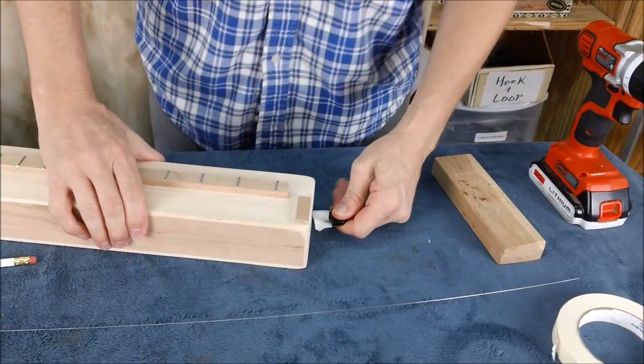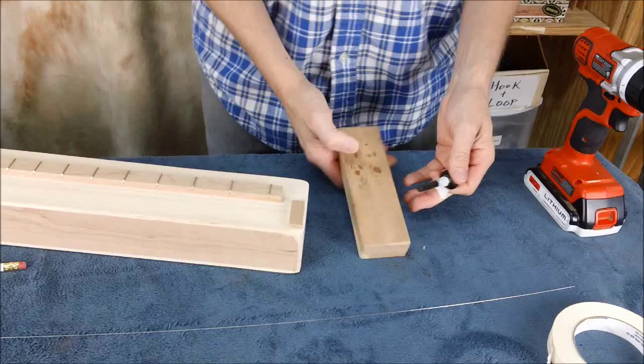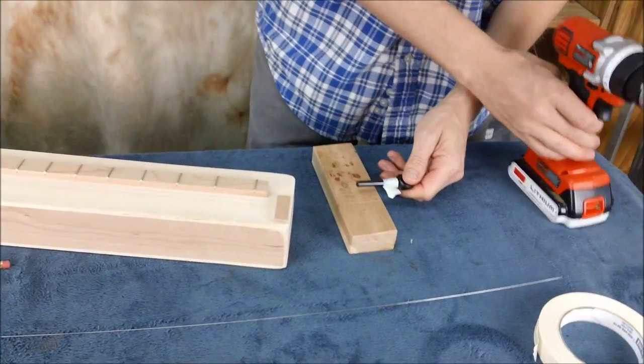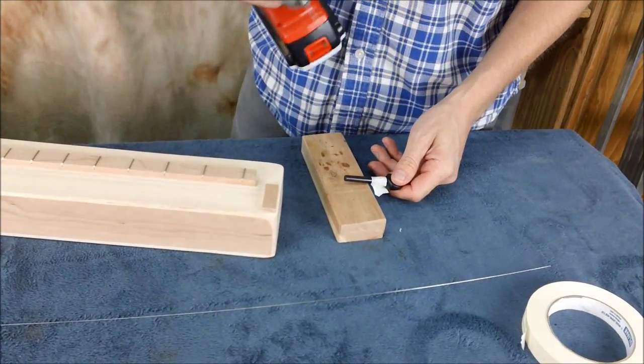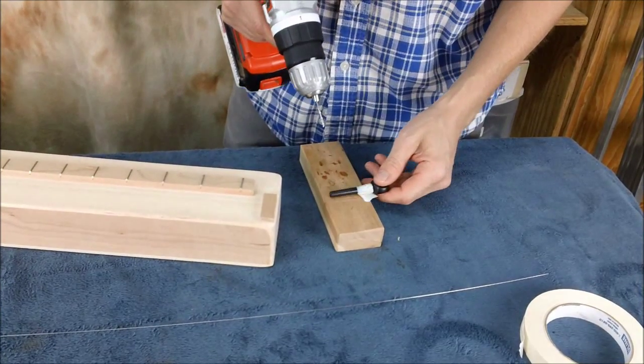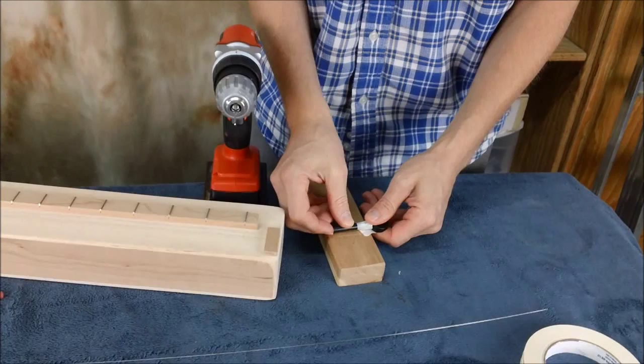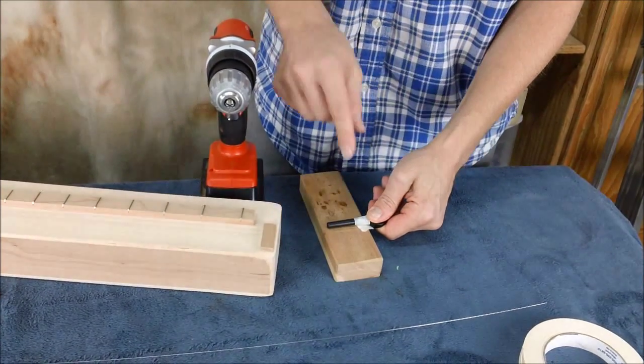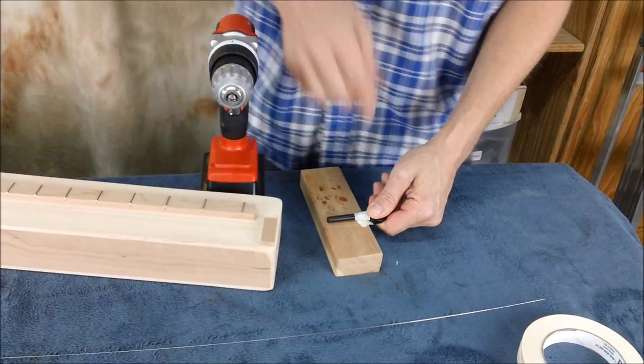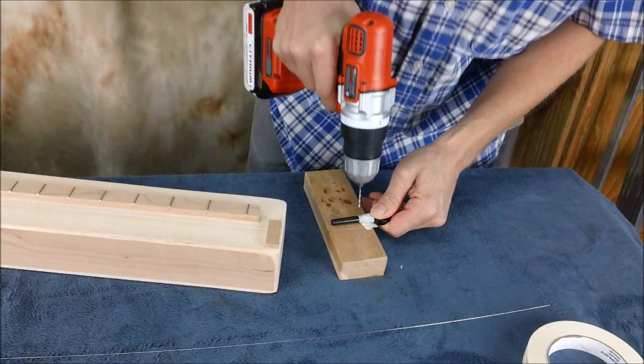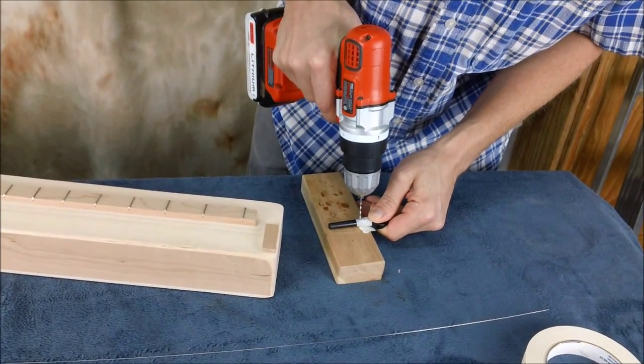Once you've got that marked, take a scrap piece of wood here and I have an electric drill with a sixteenth inch drill bit. And I want to put this pin on this scrap wood and hold it down firmly so that when I drill through I'm not tearing out the back side of the pin. So here we go.